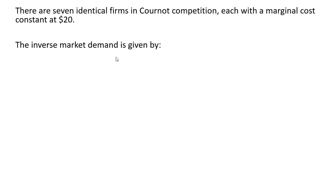The inverse market demand is given by price equals 100 minus 2 times total market output. The total market output, or Q, is the output of each firm, and there are seven of them, so from firm 1, adding it up, all the way to firm 7.